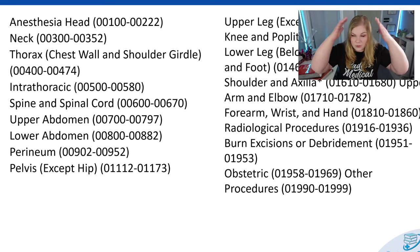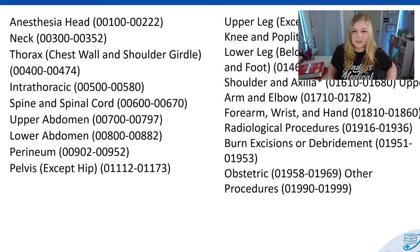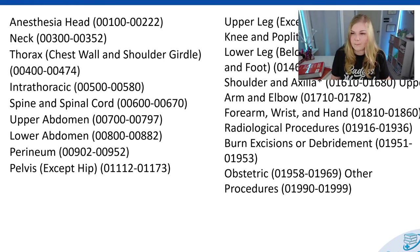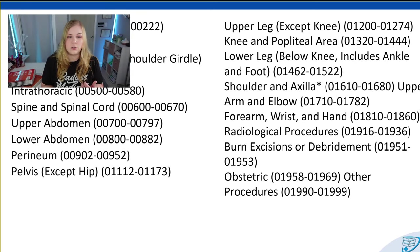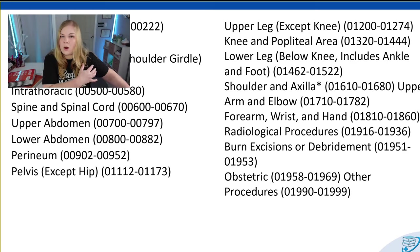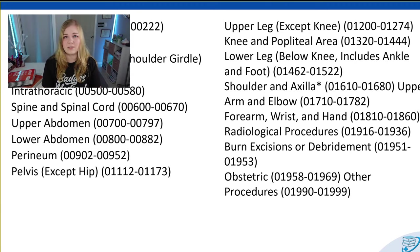We usually start at the top of the body — the head, the neck, the thorax, intrathoracic, spine and spinal cord, upper abdomen, lower abdomen, perineum, the pelvis, the upper leg except for the knee. It's important that we have a separate section for the knee, and then the knee and the popliteal area, the lower leg — stuff below the knee including the ankle and foot. After that we go to our upper extremities: shoulder and axilla, arm and elbow, forearm, wrist, and hand. We also have anesthesia codes specific to radiological procedures, burn excisions or debridements, obstetric anesthesia, and miscellaneous procedures.